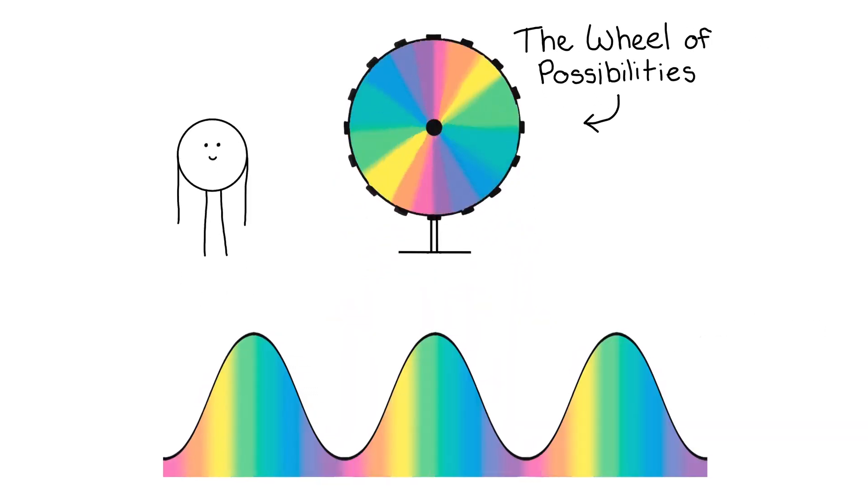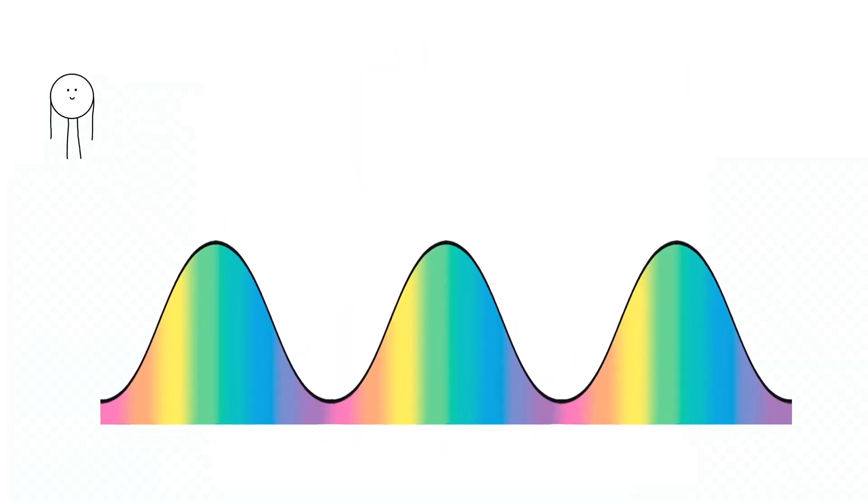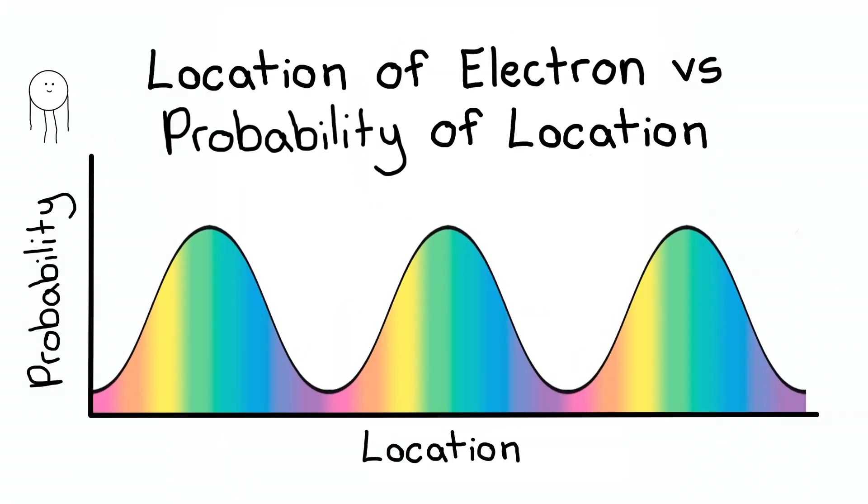Extend the pattern and we see that these possibilities are actually probabilities forming a wave. This shows us how the odds of the electron's location are distributed.